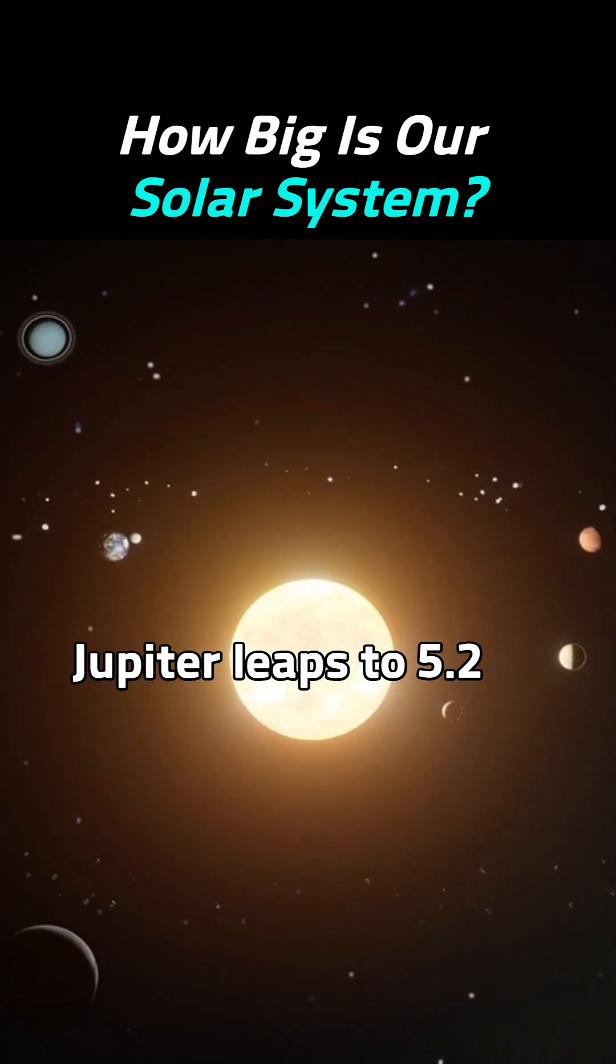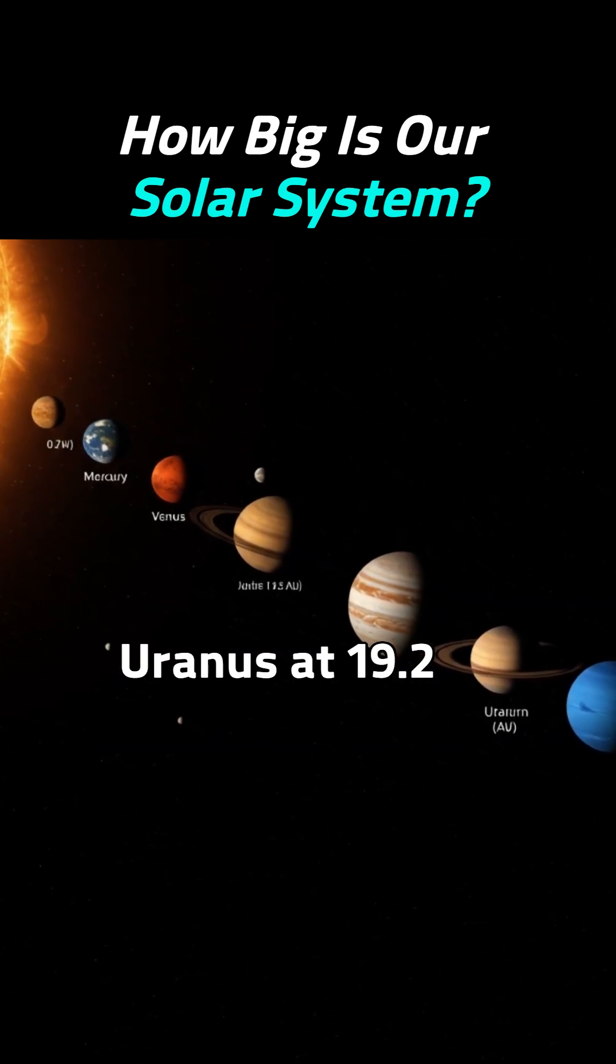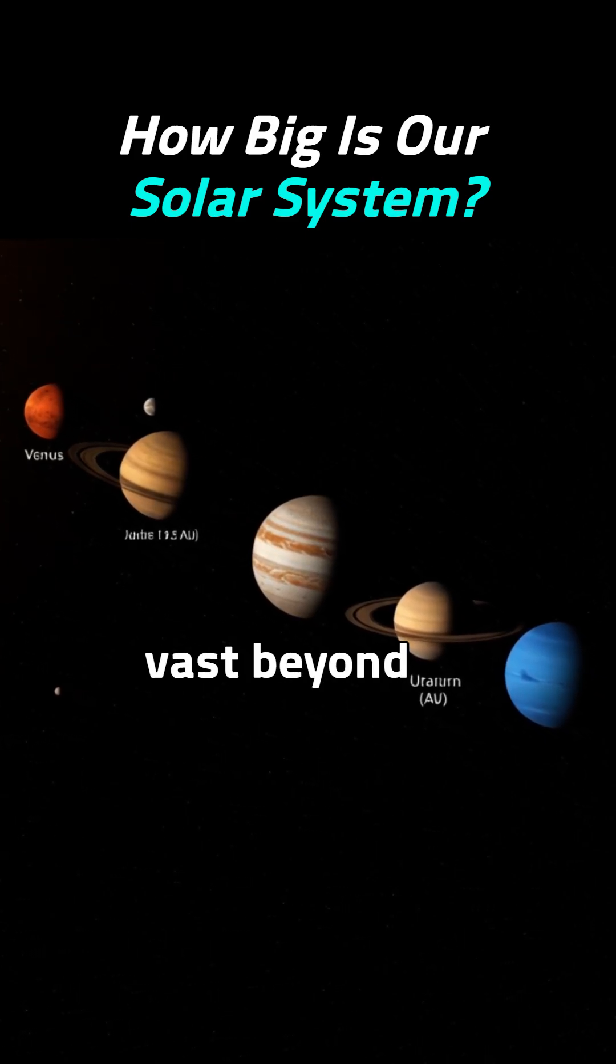Jupiter leaps to 5.2 AU, Saturn to 9.5, then Uranus at 19.2 and Neptune at 30.1. From Earth to 100,000 AU, space is vast beyond imagination.